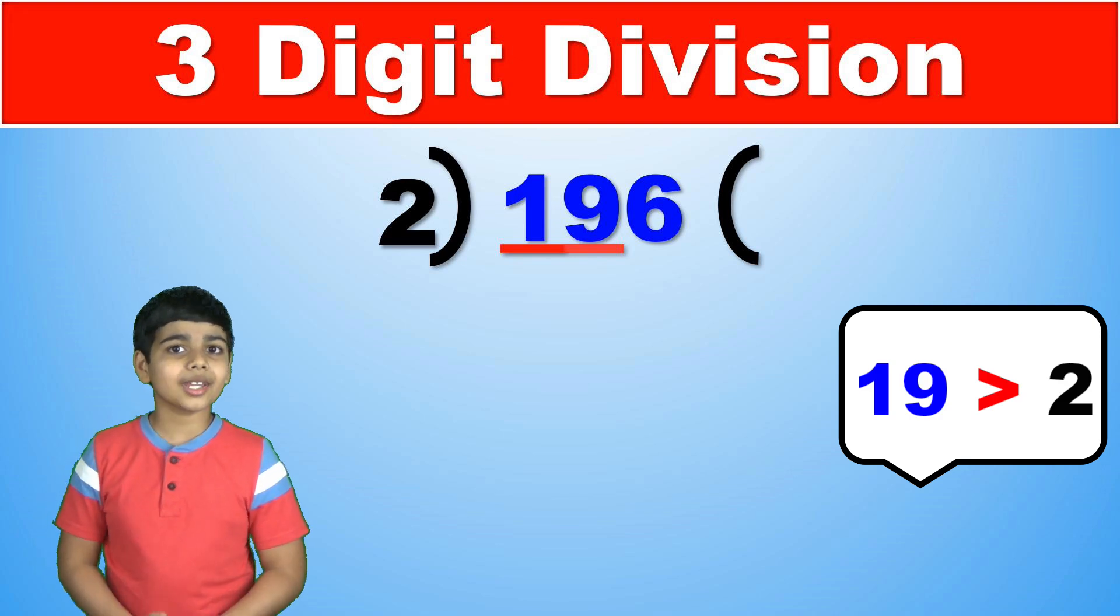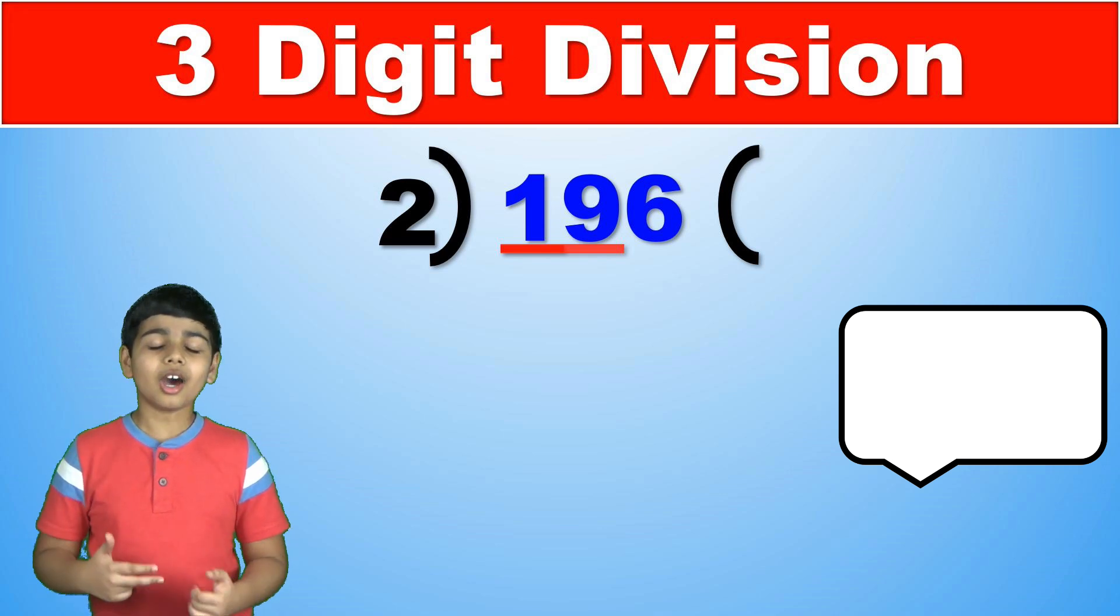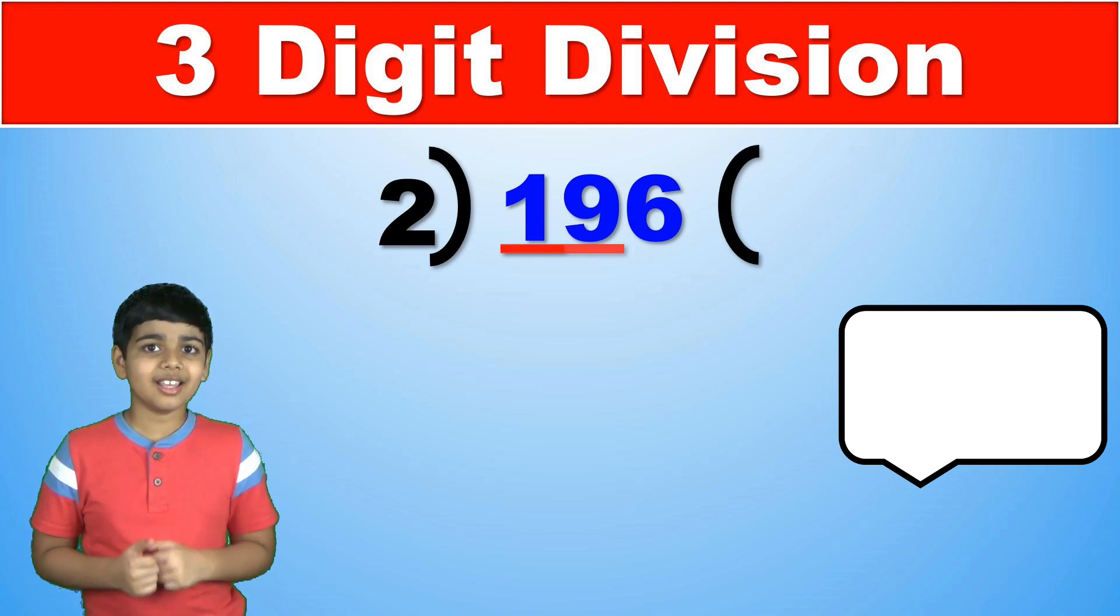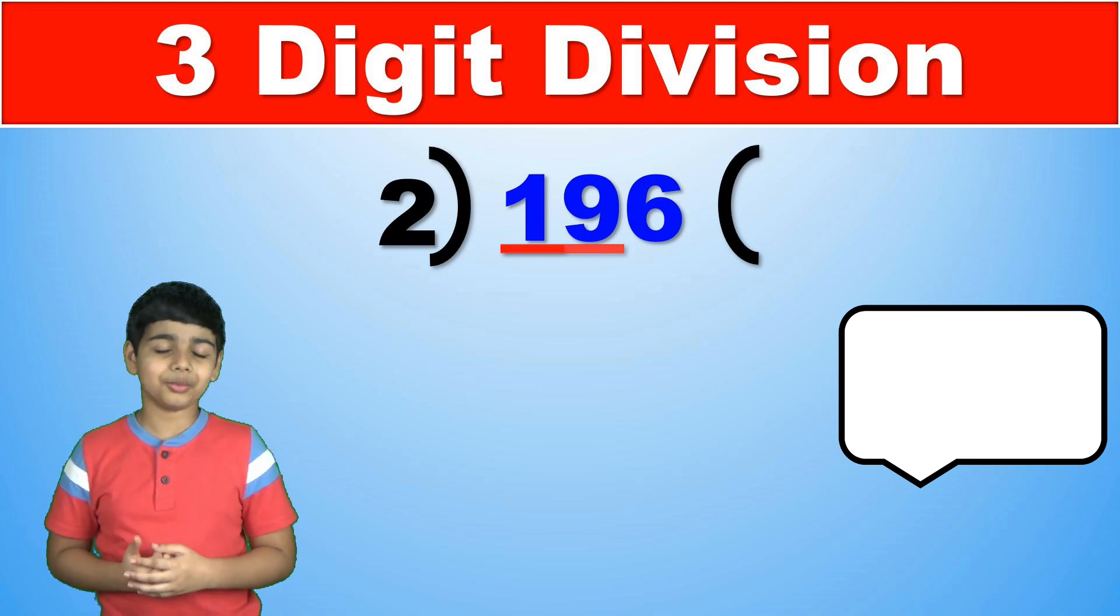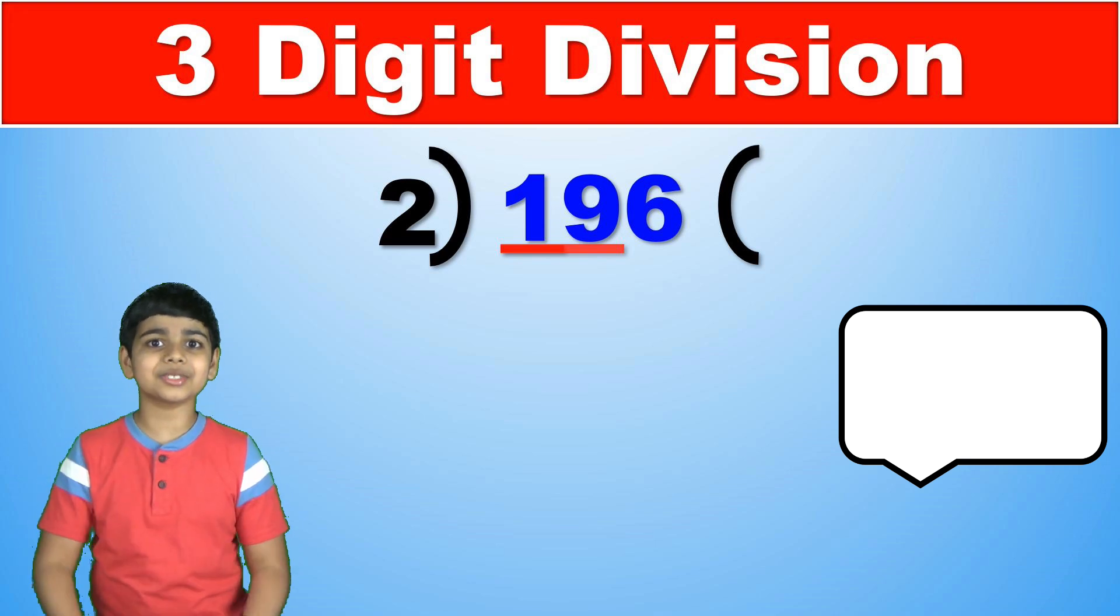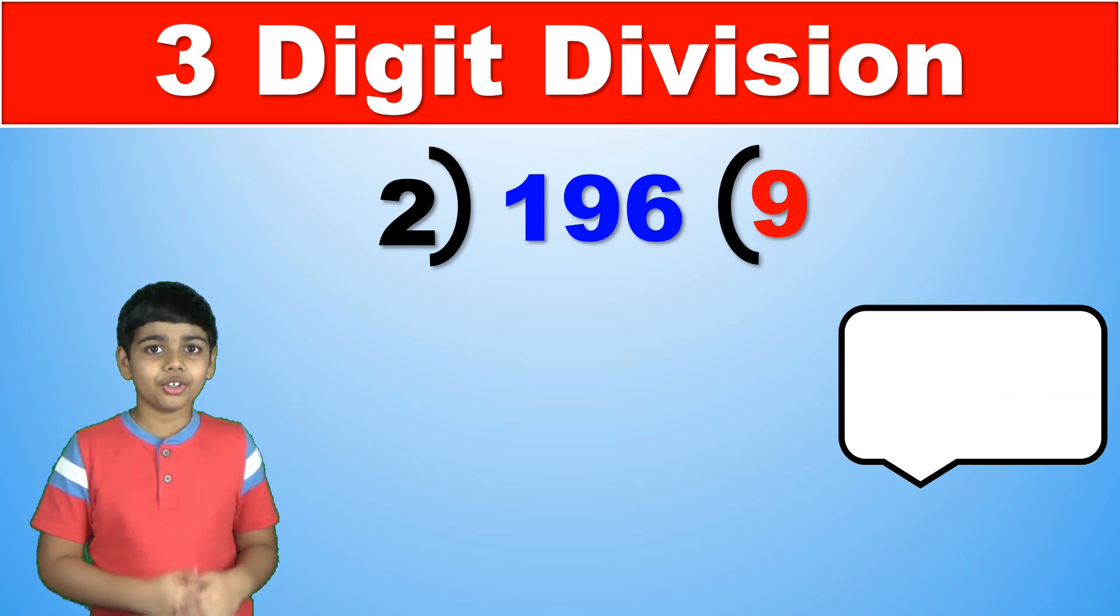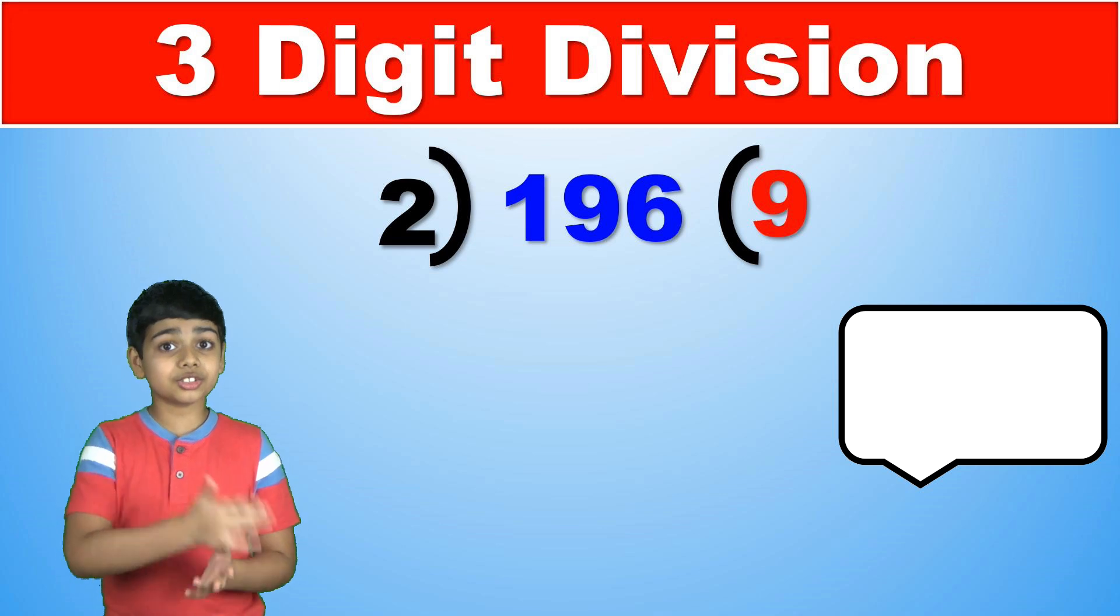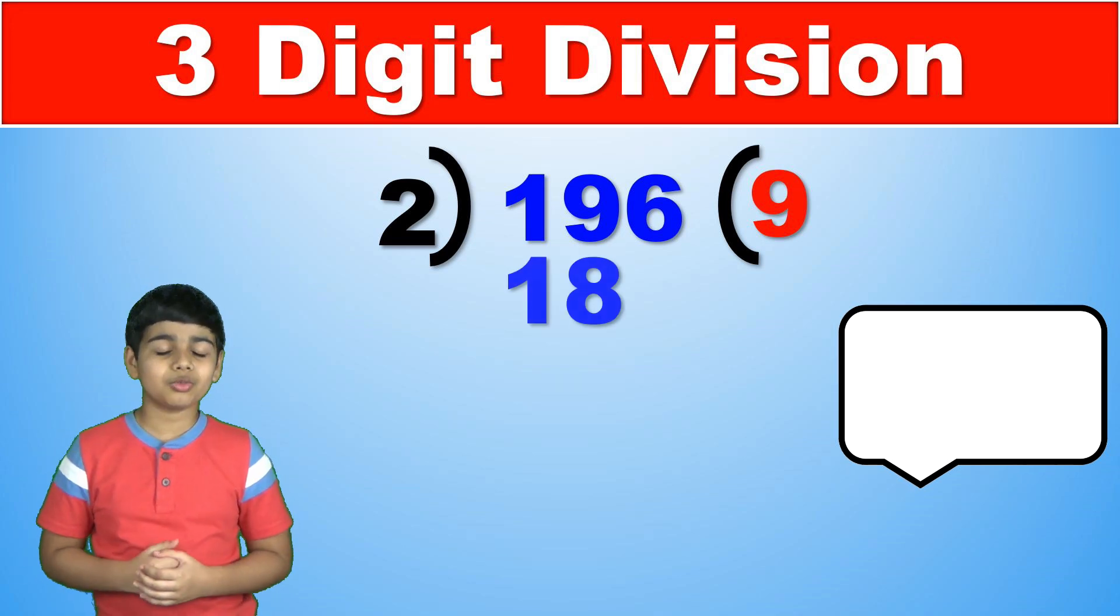So now we have to find the greatest multiple of 2 under 19 and that actually is 18 which is 2 times 9. So 9 is the first digit of our answer and 2 times 9 is 18. So we write 18 right there.